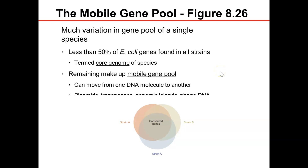When you look at bacteria, the majority of their genes can be found in what we call mobile gene pools that move from species to species. Not all types of E. coli are identical — only about 50% of their genes are found in all strains of E. coli.